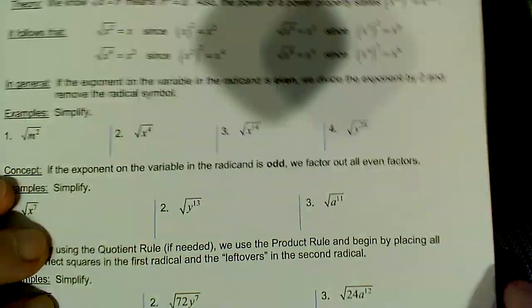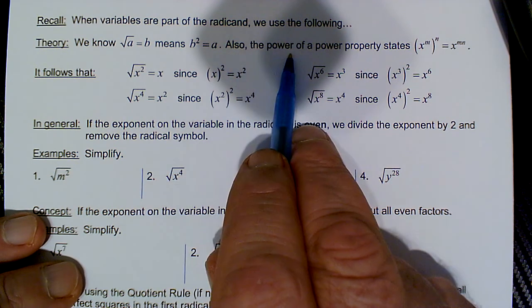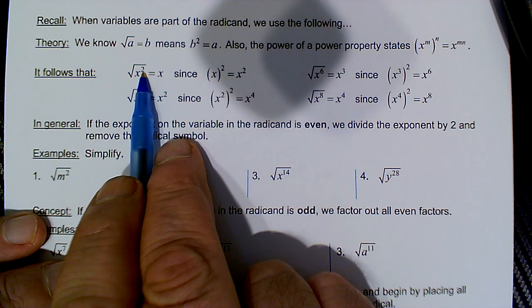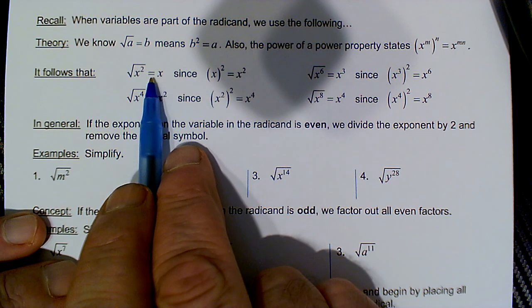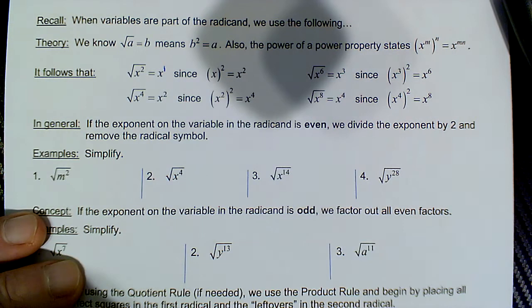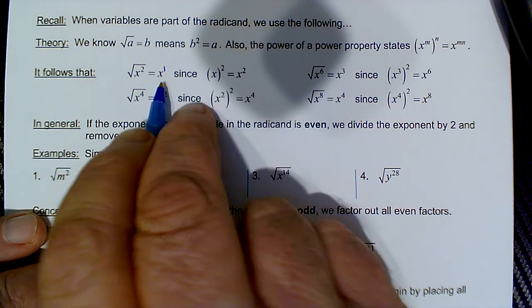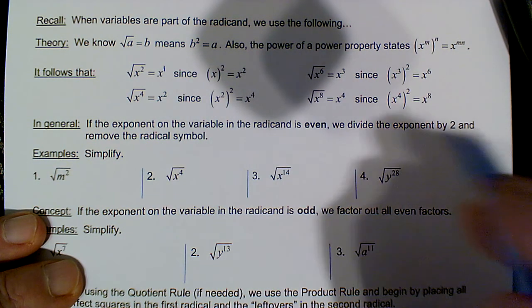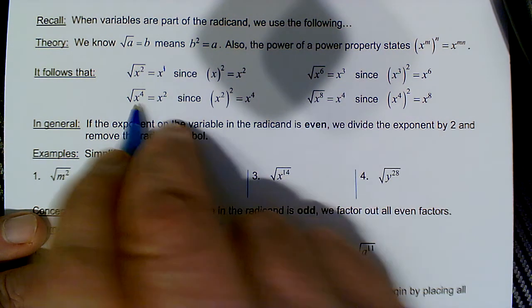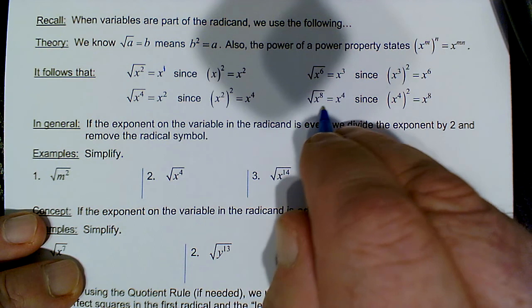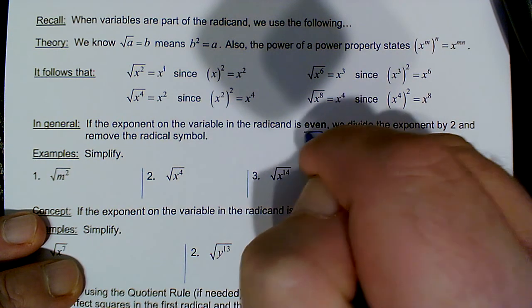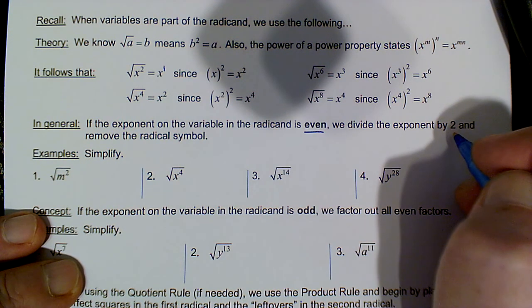Now variables are involved. We saw earlier that when we have the square root of a variable to an even power, we can remove the radical and divide the exponent by 2. So √(x²) = x. The justification: by definition, (x¹)² = x², by the power property. Similarly, √(x⁴) = x², √(x⁶) = x³, √(x⁸) = x⁴, and so on. The general property: as long as the power is even, just divide the exponent by 2 and remove the radical.